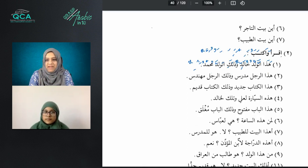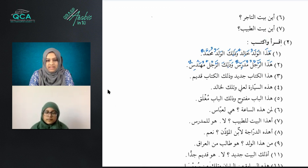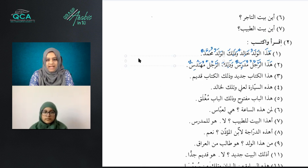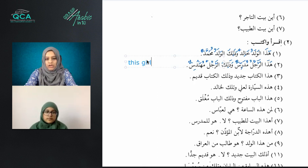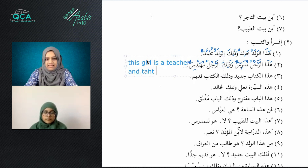Translate: 'This man is a teacher and that man is an engineer.' For the benefit of everyone at home, let me type it up. If I want to say 'this girl is a teacher' and 'that girl is an engineer,' how would you say it?